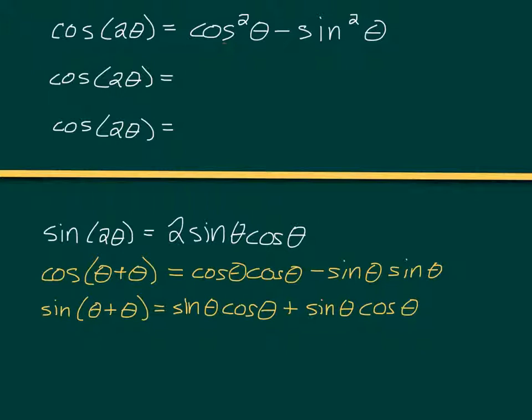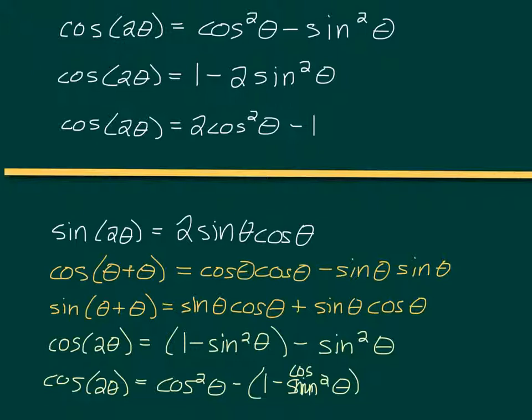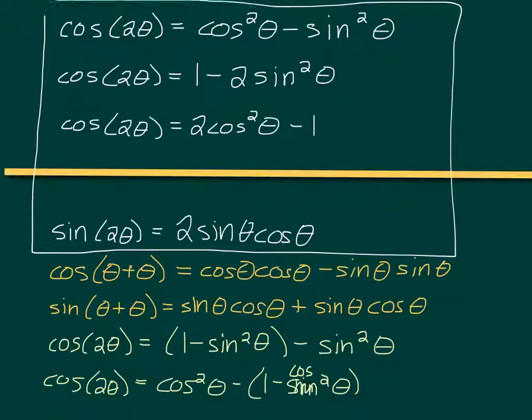So, how do we get these ones? We use our identities from a while ago. Cosine squared θ could be written as - this is the cosine 2θ is 1 minus sine squared θ minus sine squared θ, which simplifies to 1 minus 2 sine squared θ. So, we have all these formulas. The ones that matter for today are these ones.